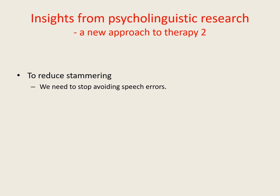In order to reduce our tendency to block and to stammer, we need to stop trying to avoid speech errors and stop worrying about how clearly and accurately we're articulating our words. This is easier said than done because people who stammer tend to hold a deeply entrenched belief that in order not to stammer they have to try as hard as they can to articulate potential problem words clearly and accurately. And this false belief tends to be reinforced by traditional approaches to stammering therapy as well as by society in general.